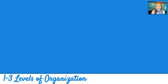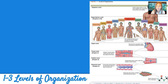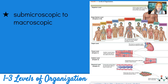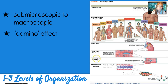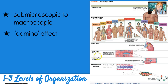Section 1-3 talks about levels of organization. We have to understand how things build up to make us a whole organism if we are to understand how we function. There is submicroscopic to macroscopic involved in levels of organization and we have to realize there is a domino effect — if something is happening at the cellular level, it is bound to affect the tissue level, then the organ level, and then possibly the entire organ system. A bunch of cells together give us a tissue, a bunch of tissues give us an organ, and a bunch of organs form an organ system. All organ systems together form our organism.